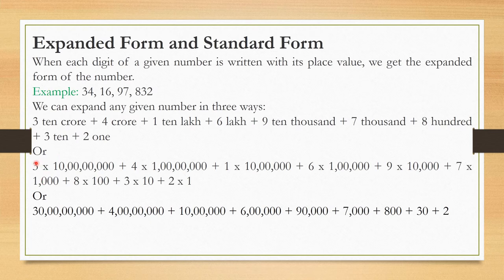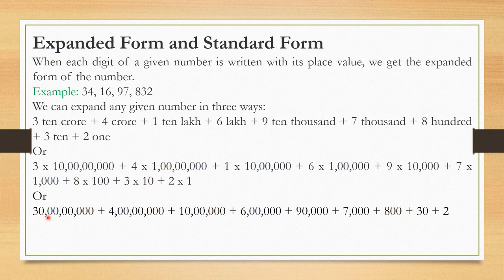Or, we can multiply each digit by its place value: 3×10,00,00,000 plus 4×1,00,00,000 plus 1×10,00,000 plus 6×1,00,000 plus 9×10,000 plus 7×1,000 plus 8×100 plus 3×10 plus 2×1. Or simply: 30 crores plus 4 crores plus 10 lakhs plus 6 lakhs plus 90,000 plus 7,000 plus 800 plus 30 plus 2.